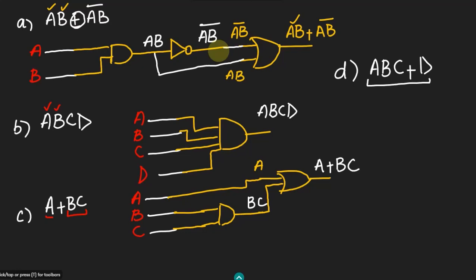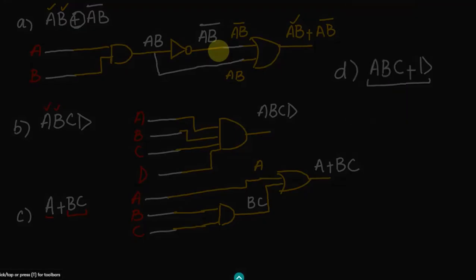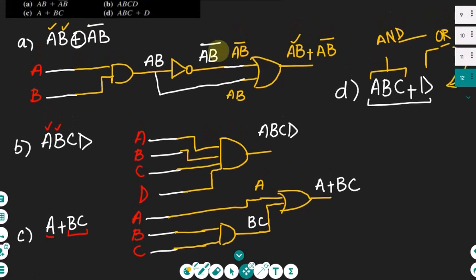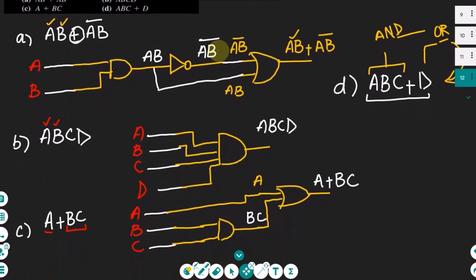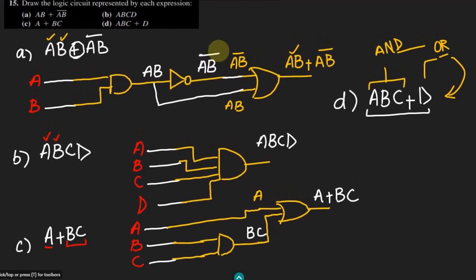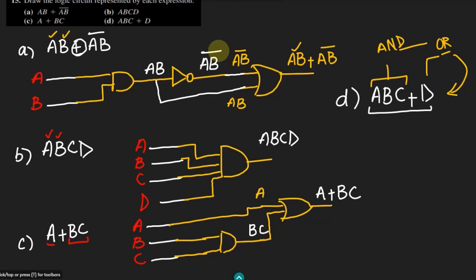That is the same question which we have previously done. Initially, here a, b, c — these three will be multiplied together by using the AND gate, and this AND gate output will be OR-ed together with d to give me this output. That is the solution of this question in which we have solved all the relevant examples. Thank you so much and I will see you with some more examples in our upcoming video. See you soon.